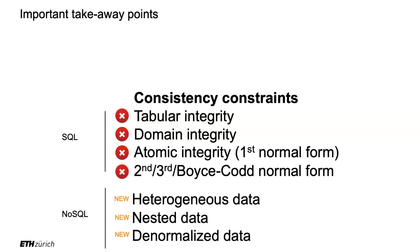However, there are compromises that needed to be made in order to do this. Typically, we kind of gave up on some things, like relational integrity — tabular integrity is just another name for it — domain integrity, atomic integrity, and the second, third, 3.5 (Boyce-Codd), fourth, fifth, and sixth normal forms. We needed to give that up.